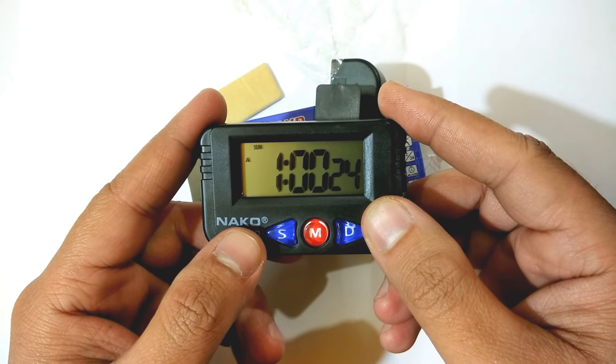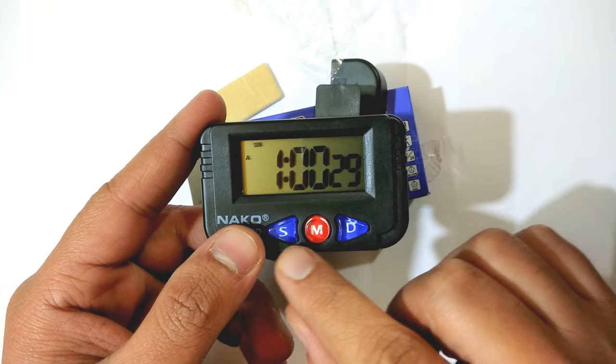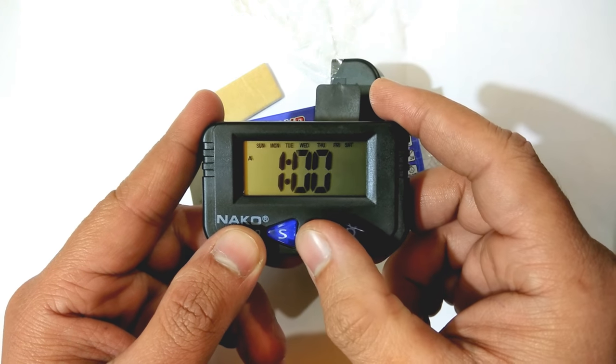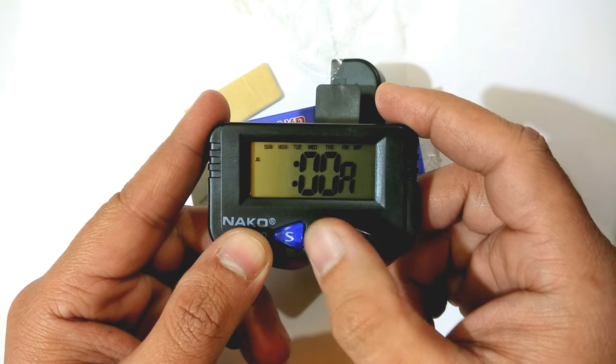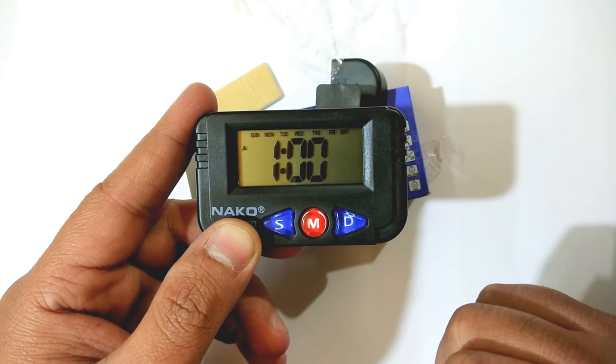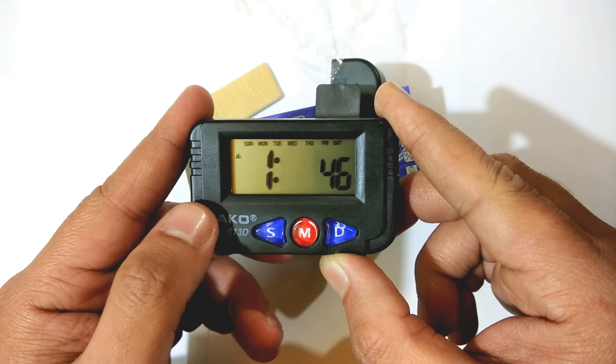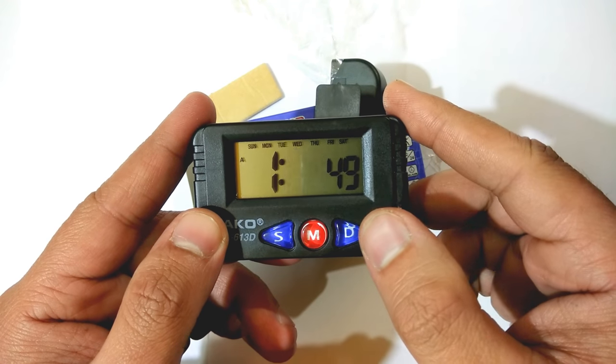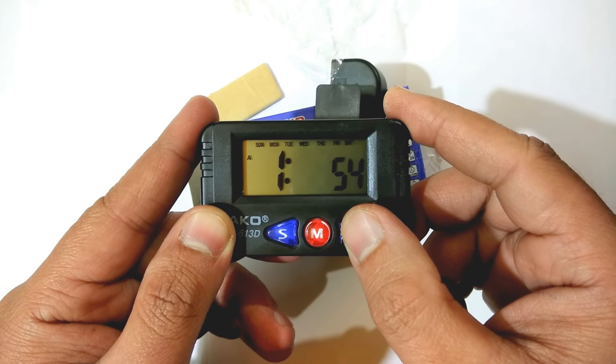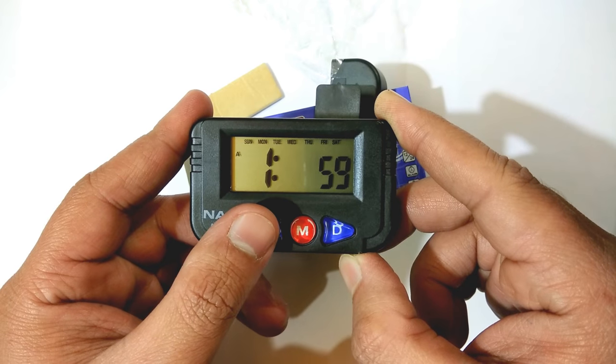Now the question is, how to set the time? There are three buttons. M is for mode. Let's change the mode. When this starts blinking, we will start to set the time. Press this S button. The minute is blinking, now set this minute.